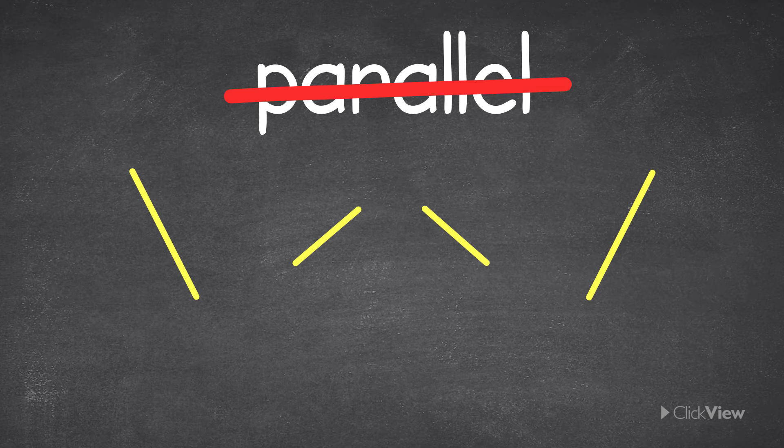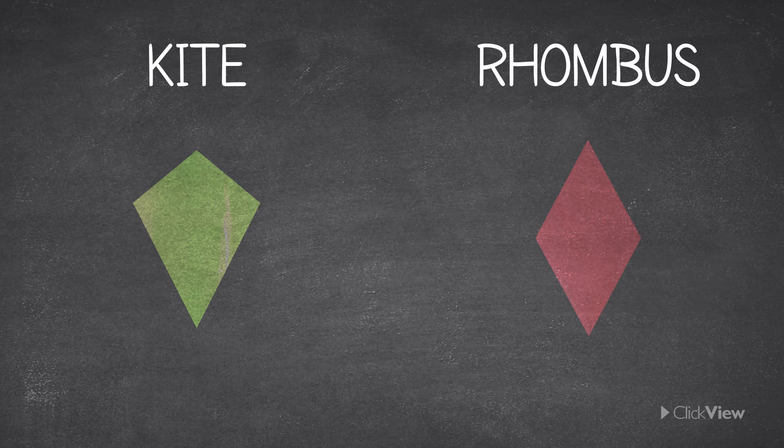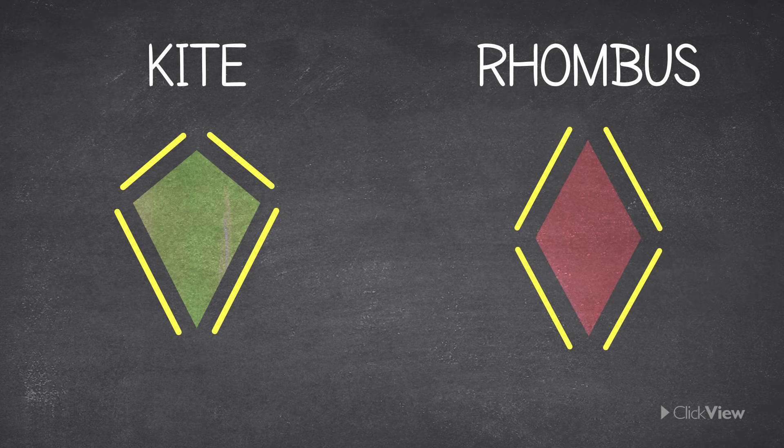Can you see how the shape of a kite is different from a rhombus? Remember, all four sides of a rhombus are the same length, while a kite has two pairs of sides and each pair has the same length.